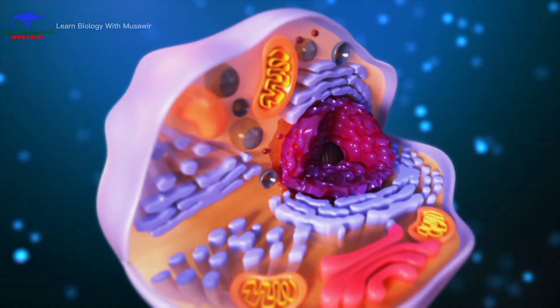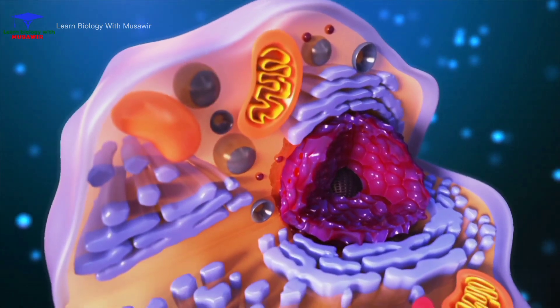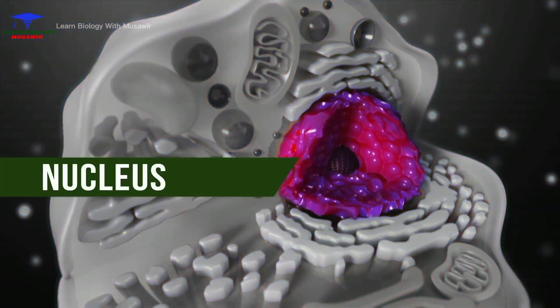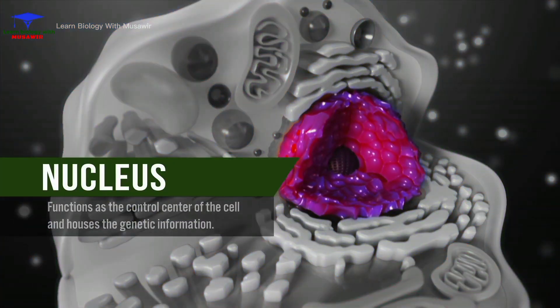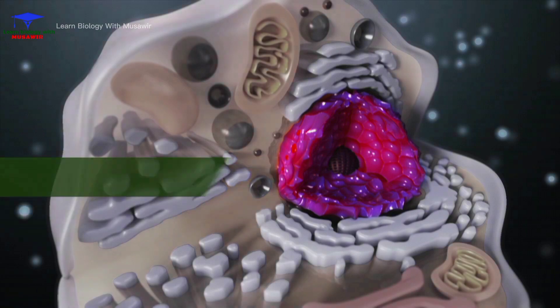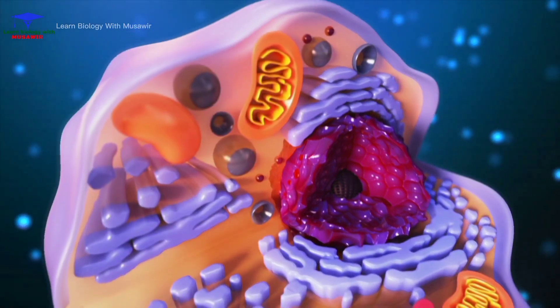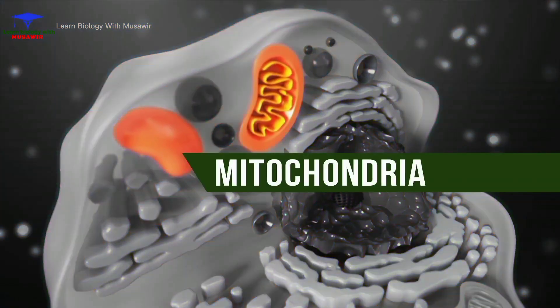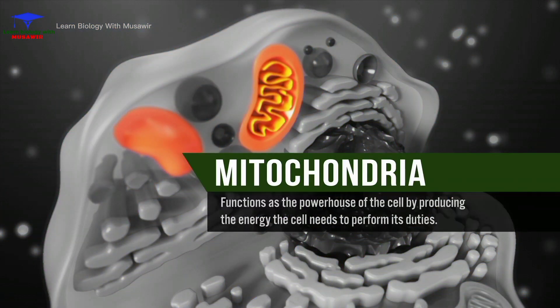The nucleus would be like the capital building of the city because it functions as the control center of the cell and houses the genetic information, or instructions for what the cell is supposed to do. The mitochondria is the powerhouse of the cell.